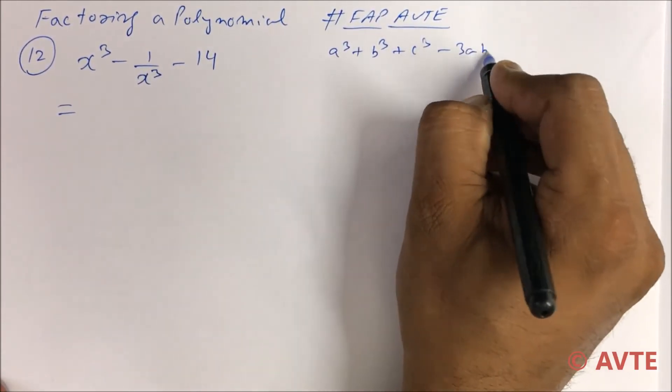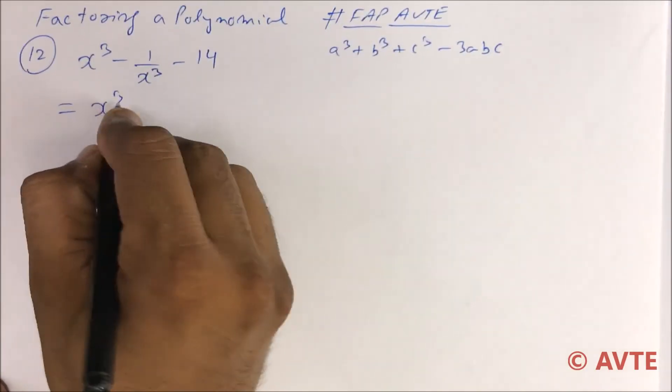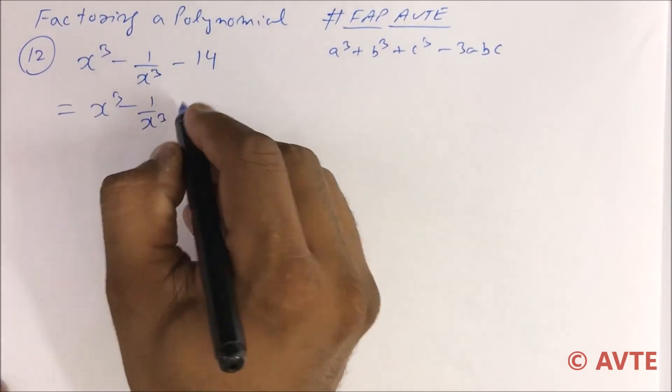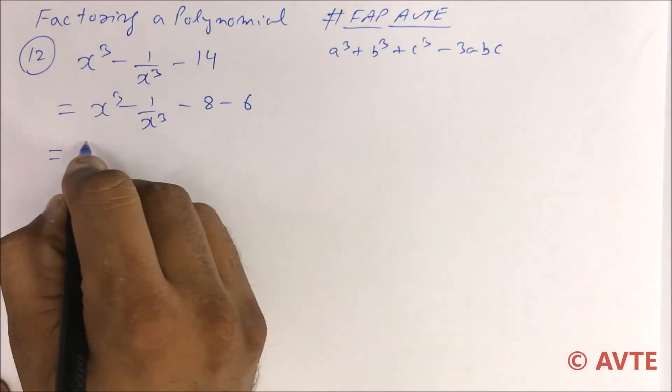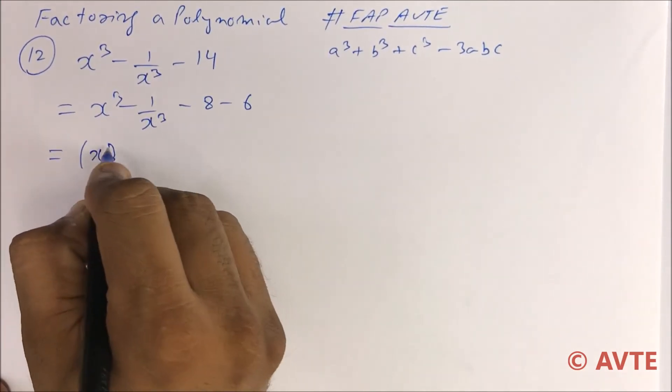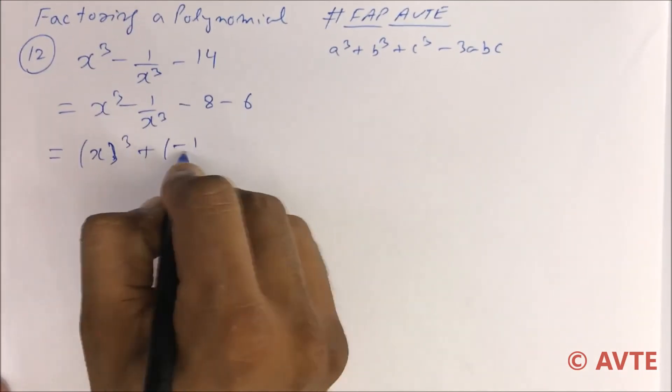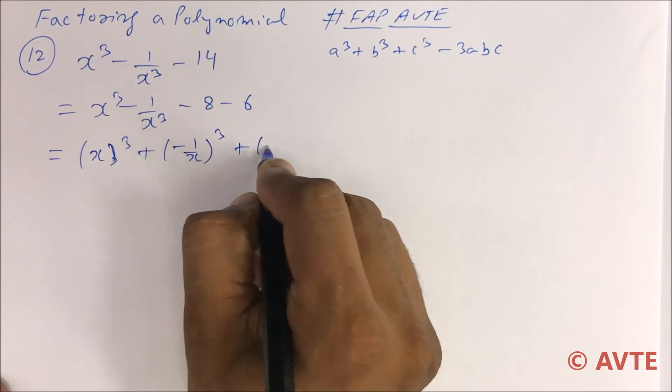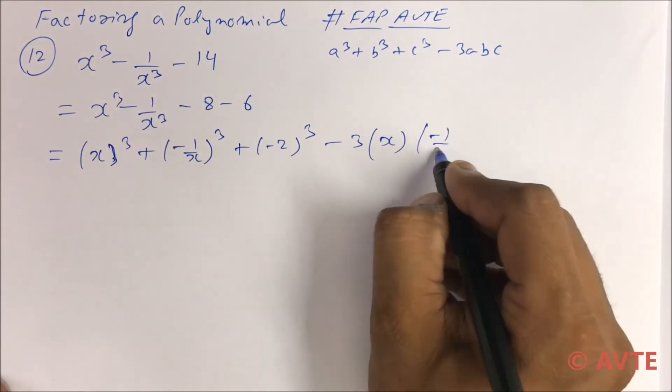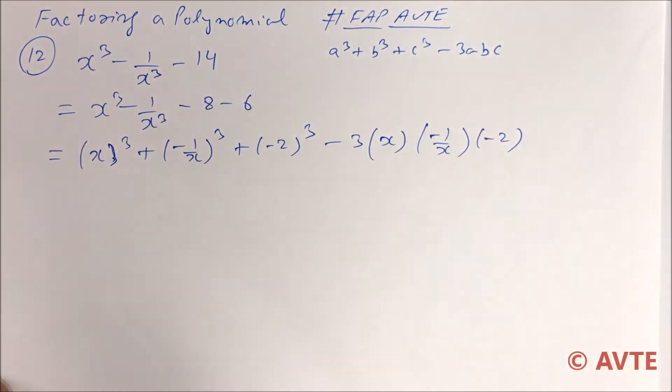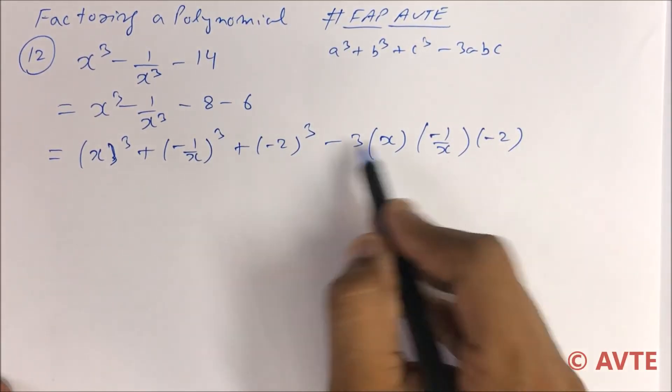c³ - 3abc. So we can split this as -8, -6, and turn to the formula a³ + b³ + c³ - 3abc. Just check it out - minus minus